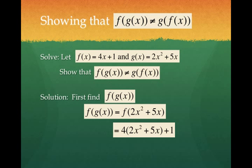Notice instead of writing 4x plus 1, I'm writing 4 times my g of x function plus 1. I'm going to distribute that 4, and I get my new function 8x squared plus 20x plus 1. That's f of g of x.